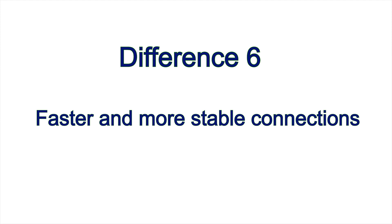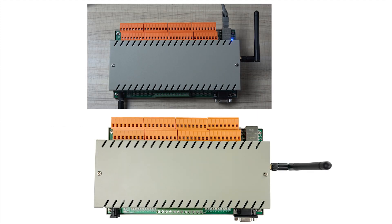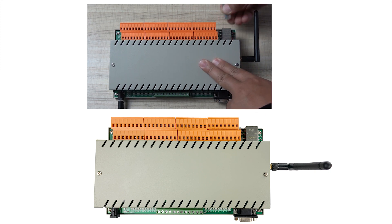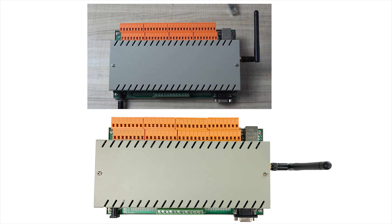Difference 6: faster and more stable connections. When the Ethernet network is disconnected, the H32B can switch to the Wi-Fi network immediately.